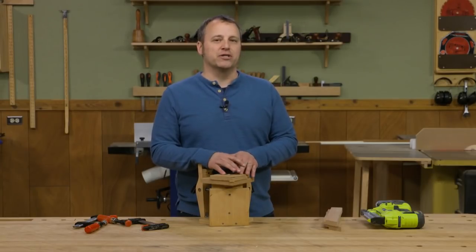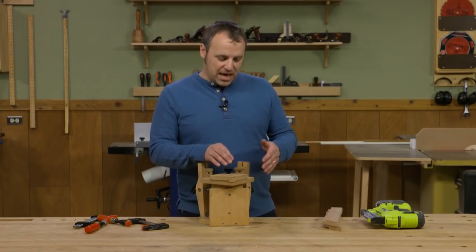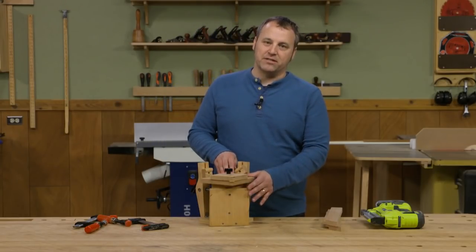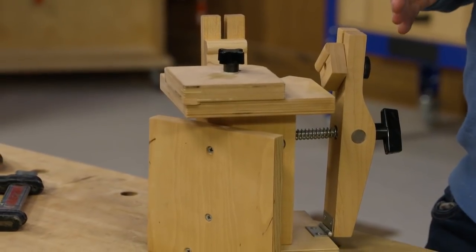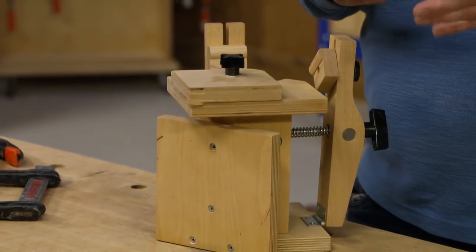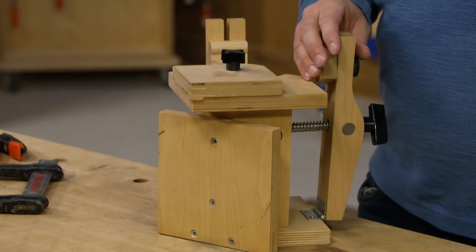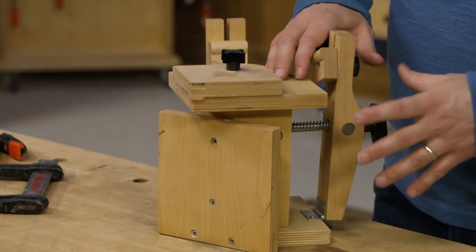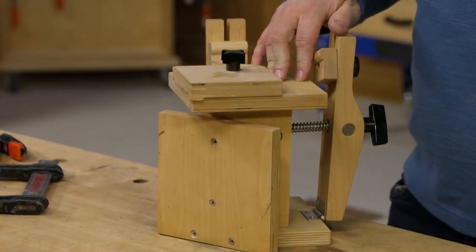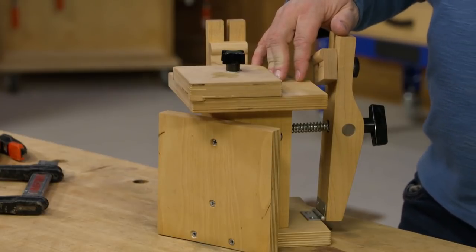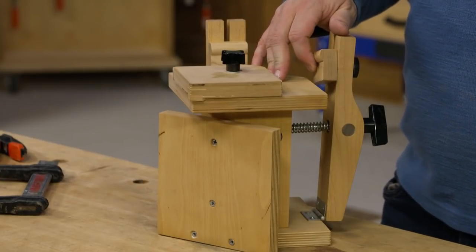And it's this miter vise. It's actually modeled after an old Stanley version. Those were made out of cast iron. You can find vintage ones around in different places, but making one yourself pays a lot of big dividends.